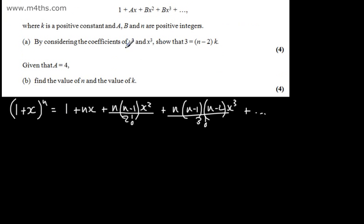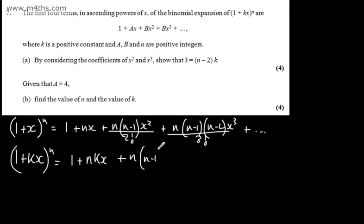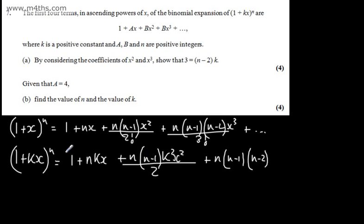Let's apply that here. The key observation is that b and b are the same, so the coefficients of x² and x³ are equal. Expanding (1 + kx)^n gives 1 plus nkx, plus n(n−1)·k²x² divided by 2 factorial, plus n(n−1)(n−2)·k³x³ divided by 3 factorial, which is 6.